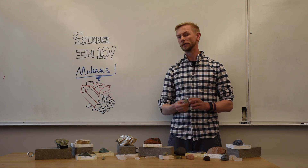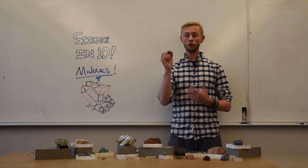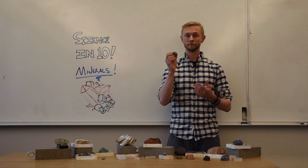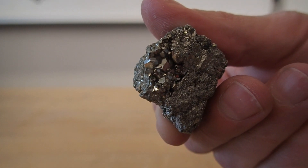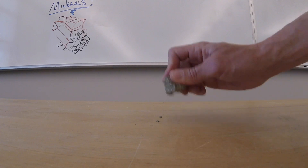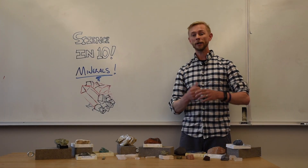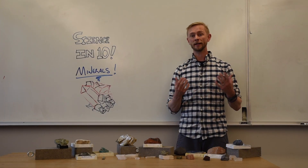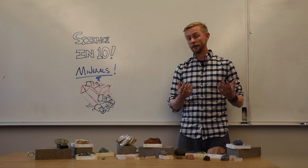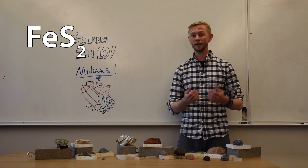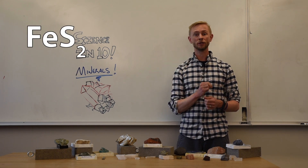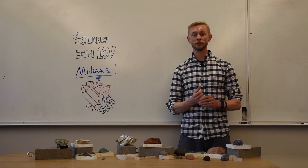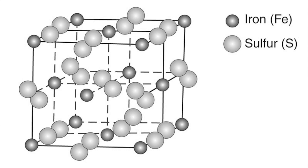As an example, let's consider pyrite, also known as fool's gold. Pyrite is a mineral — it's most definitely naturally occurring, solid, and inorganic. Pyrite also has a set chemical composition: it is an iron sulfide with the formula FeS2, one iron atom and two sulfur atoms. And these iron and sulfur atoms are arranged into a cubic structure at the atomic level.